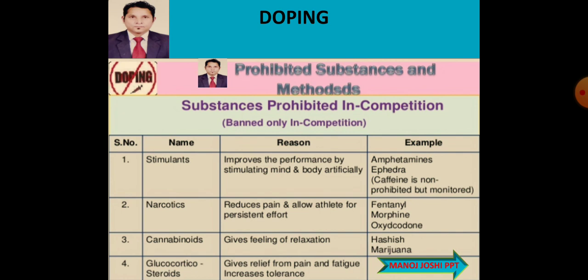Cannabinoids are derivatives of Cannabis sativa and give a feeling of relaxation — hashish and marijuana are banned in competition. Glucocorticosteroids give relief from pain and fatigue and increase endurance tolerance. These substances are prohibited only during competition.